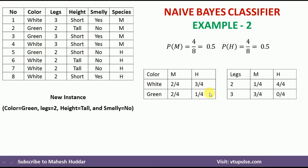Similarly, we calculate for legs. There are two possible values: 2 and 3, with outcomes M and H. Legs value 2 appears one time in M examples and four times in H examples. Legs value 3 appears three times in M examples and zero times in H examples.